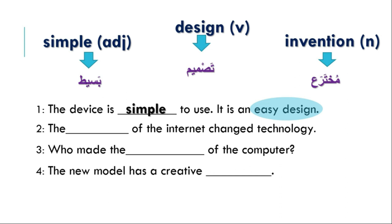Number two: the ___ of the internet changed technology. The key clue is 'internet changed technology' — something was introduced that changed technology. The internet was introduced, and it changed technology. So the answer is invention. The invention of the internet changed technology.